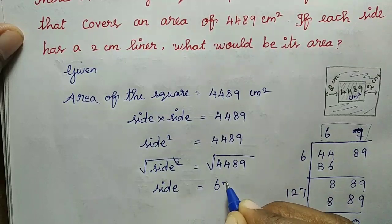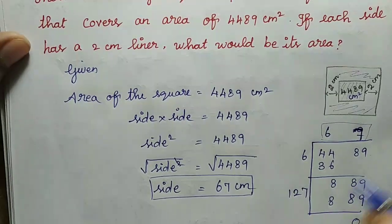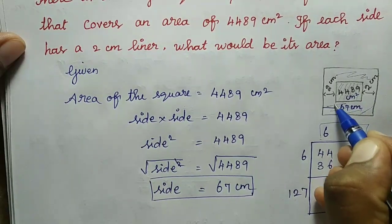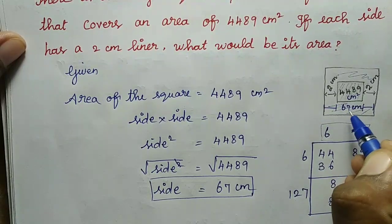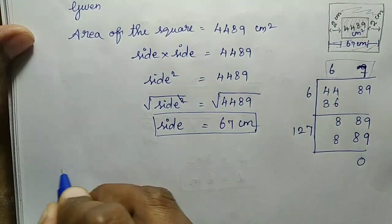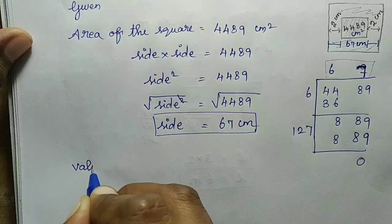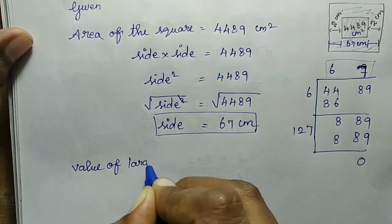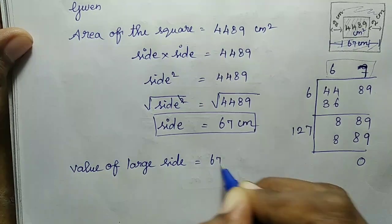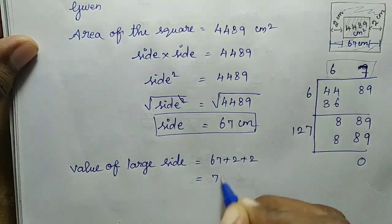Now we need the measurement of the large side. The side value is 2 cm on each side. So value of large side is 67 plus 2 plus 2, that equals 71 cm.